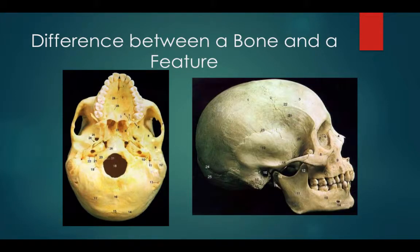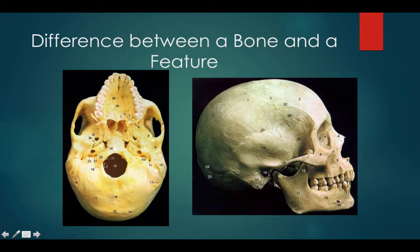Let's talk about the difference between a bone and a feature. Here on the right-hand side we have the underside of the skull. Right here would be the occipital bone, and right here would be the foramen magnum. The occipital bone is the bone; the foramen magnum is the feature. Here would be the zygomatic bone, and here would be the zygomatic process of the temporal bone. Right here would be the temporal bone.